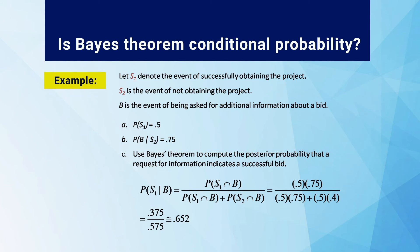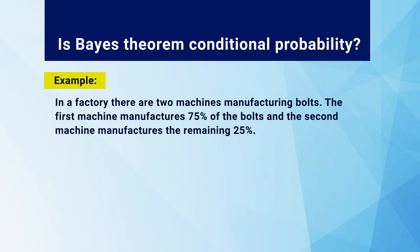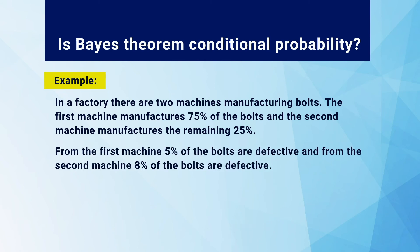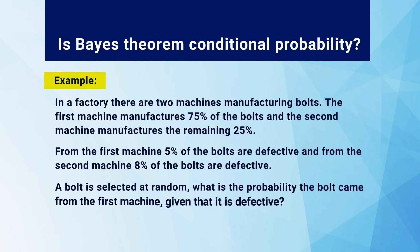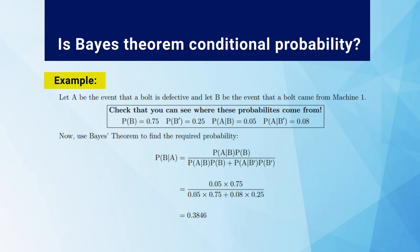Putting the figures in and computing, the value comes to 0.652. Another example: in a factory there are two machines manufacturing bolts. The first machine manufactures 75% of the bolts and the second machine manufactures the remaining 25%. From the first machine 5% of the bolts are defective, and from the second machine 8% are defective. A bolt is selected at random — what is the probability the bolt came from the first machine given that it is defective? Let A be the event that a bolt is defective and B be the event the bolt came from machine 1. P(B) = 0.75, P(B') = 0.25, P(A|B) = 0.05, P(A|B') = 0.08. Using Bayes' theorem, the value is 0.3846.